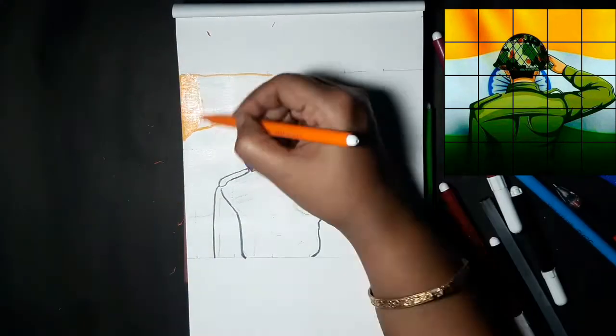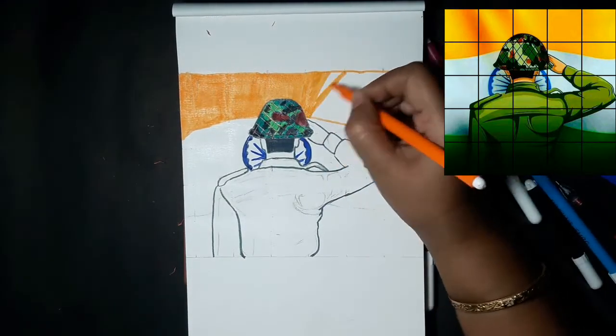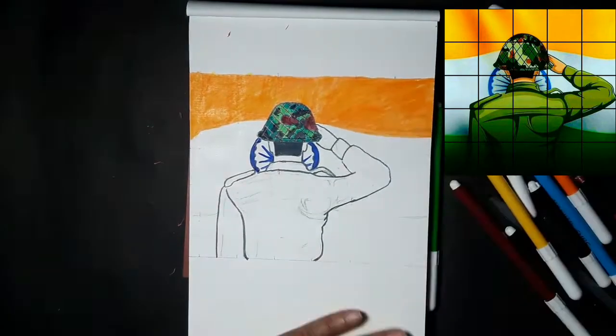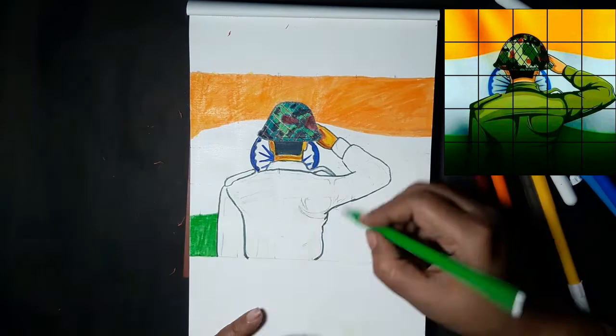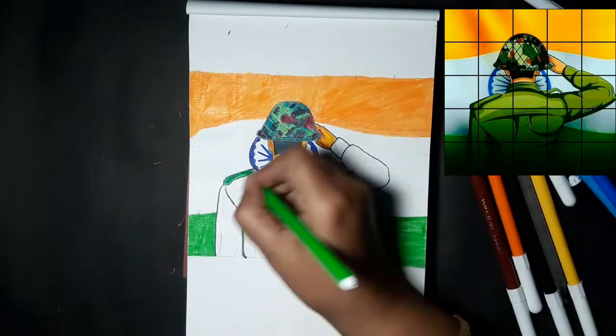The saffron color is used for the upper part of the flag, and the wheel is done with blue color. The lower part of the flag is done with fresh green or light green color.